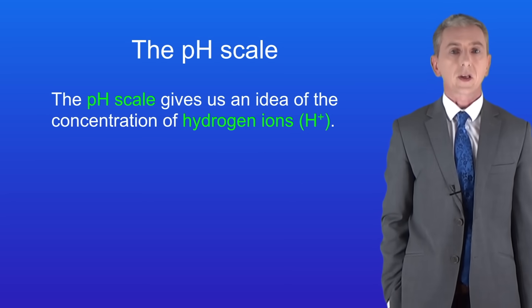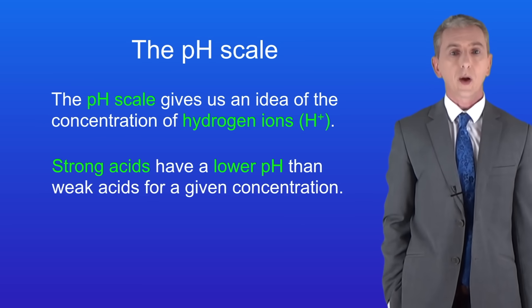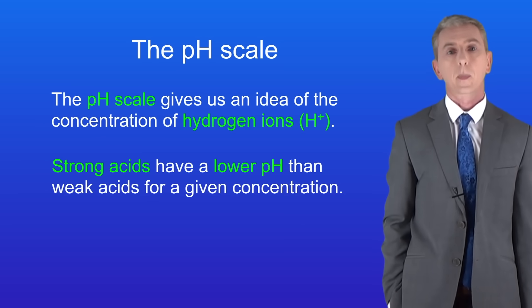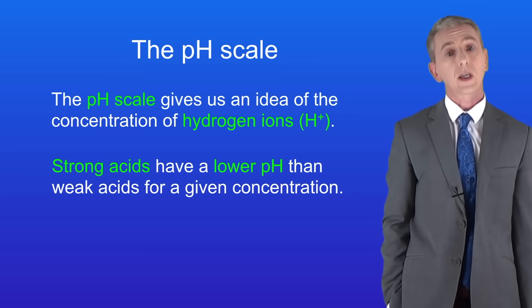The pH scale gives us an idea of the concentration of hydrogen ions produced by an acid. Strong acids have a lower pH than weak acids for a given concentration of the acid. That's because strong acids fully ionize, producing a greater concentration of hydrogen ions than weak acids, which only partially ionize.